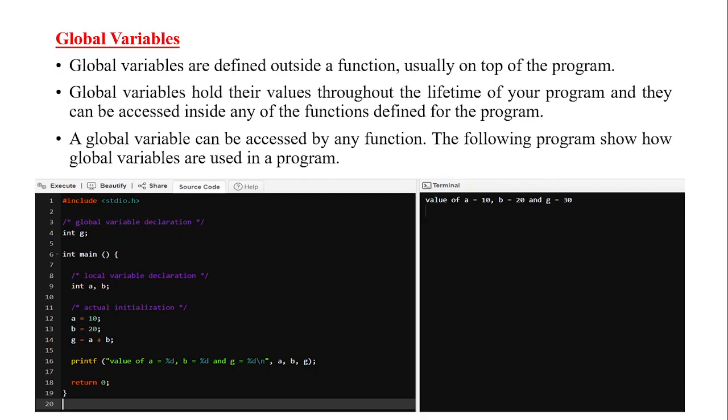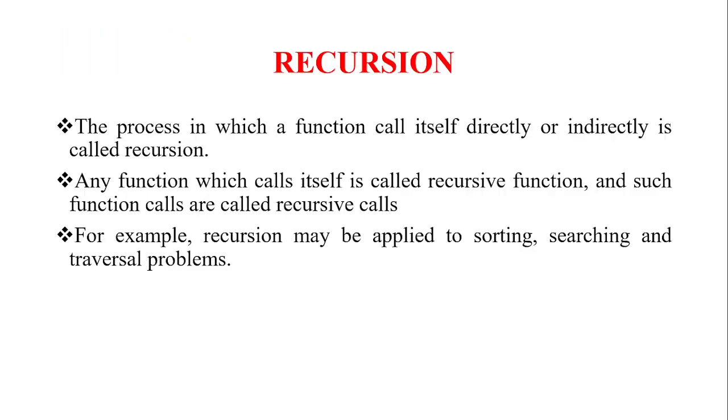The following programs show how global variables are used in a program. So if you see here before the main I have given int G. Inside the main I have given two variables. It is local A, B and I am assigning the value as 10 and 20. Now in the G global variable I am adding this A plus B. So you are getting the answer. But here compared to the previous program here G is global variable because we are declaring it before the function, outside the function.